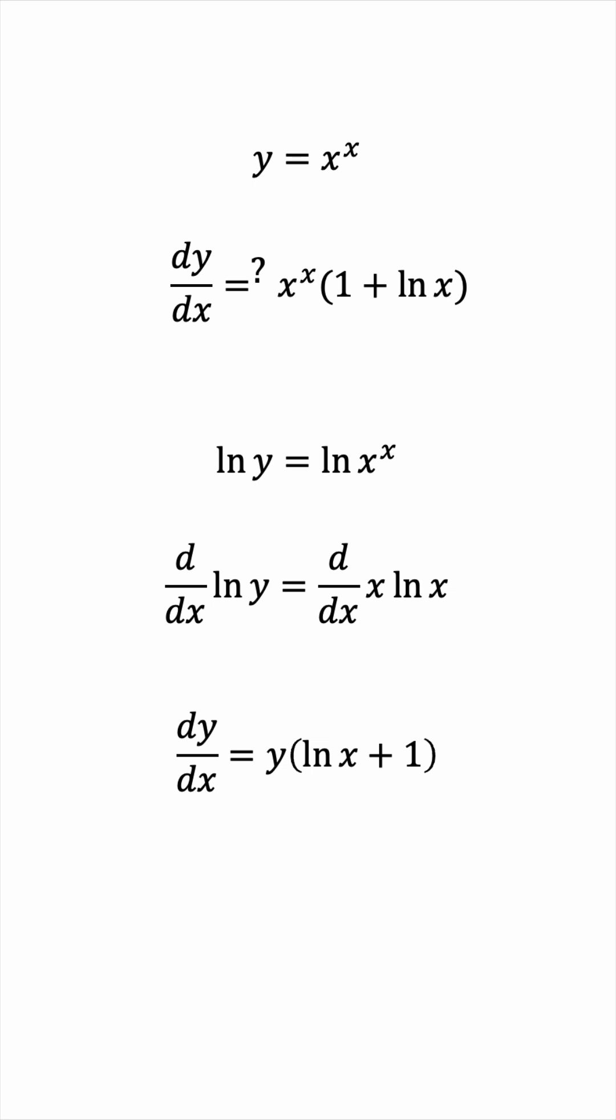so we'll substitute for y in terms of x. What was y again? It was x to the power of x, the original question. So we have dy by dx equals x to the power of x times the natural log of x plus 1.